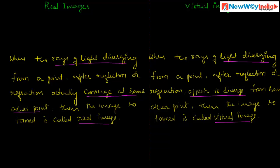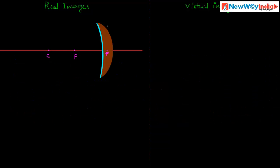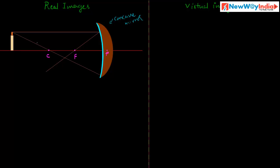Let us discuss about them with examples. Consider a concave mirror. In the case of a concave mirror, let us place an object beyond the center of curvature. When rays of light traveling parallel to the principal axis strike the mirror, they reflect and pass through the principal focus. Another ray passes through the center of curvature, and these two rays meet at a point where the image is formed.